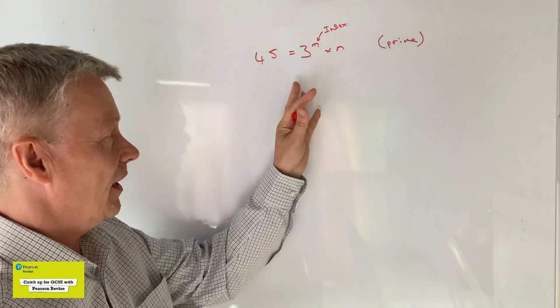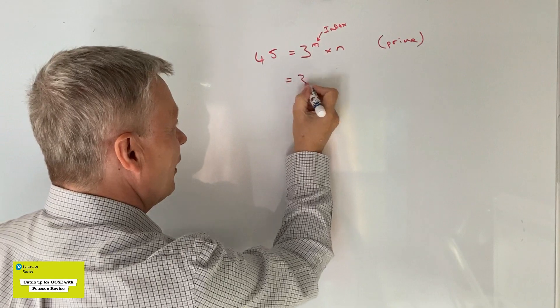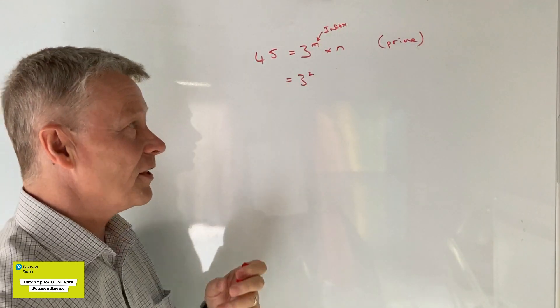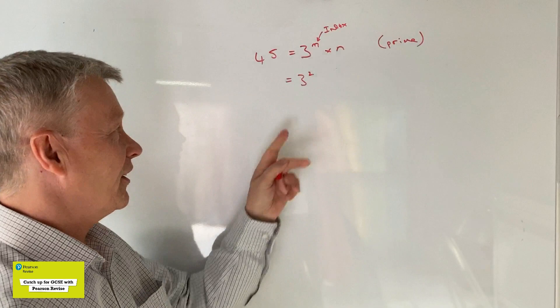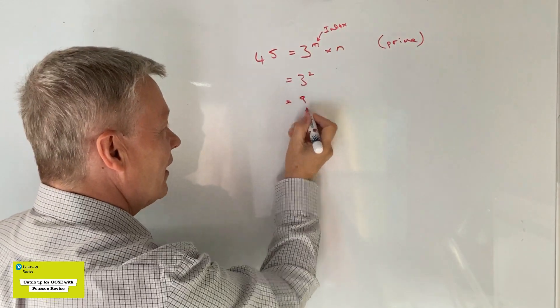So just as an idea really, what I'm going to do is I'm going to say, well in that case I'm just going to write that as 3 squared. It's the lowest index that I can think of that's very easy for me to calculate because 3 squared is 9.